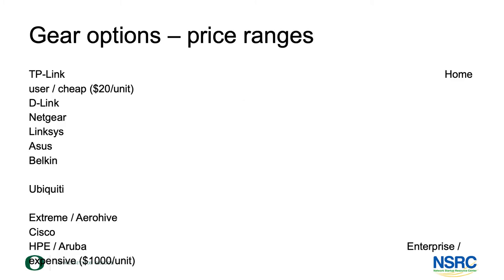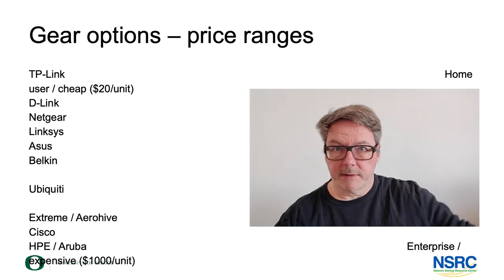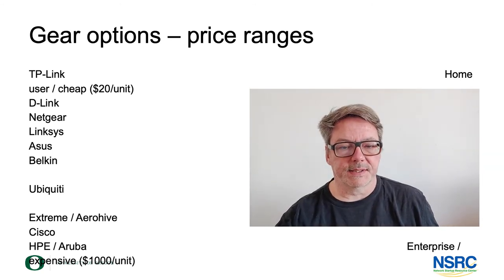As for gear options — and these are just a few brand names that will change over time and vary depending on where you are — the price range literally goes from the $10 range. The cheapest you can buy online today, typically from Chinese sources, is home user equipment: $10 or $20 buys you an access point. On the upper end, enterprise wireless is very high quality, with management and service, and goes to thousands of dollars per access point.